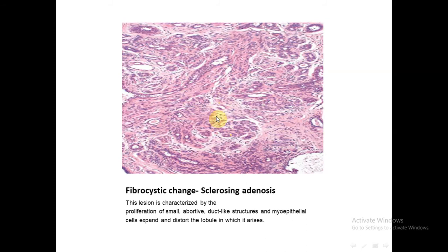Here we have sclerosing adenosis. It is a type of fibrocystic change. First, we see that the lobular architecture is preserved. We see breast lobules and there is a proliferation of multiple small ductules or duct-like structures. These ducts are lined by a single layer of epithelial cells and a layer of myoepithelial cells, which is important for diagnosis of benignity. Here we have the stromal fibrosis, with proliferation of small duct-like structures and fibrous stroma.